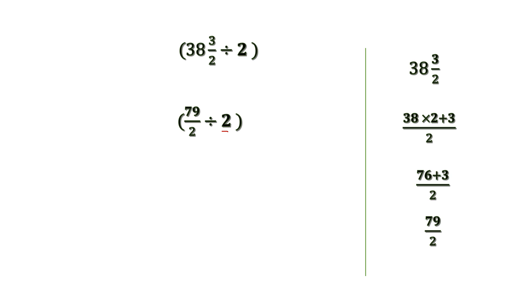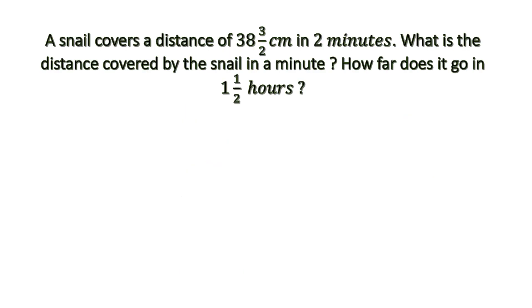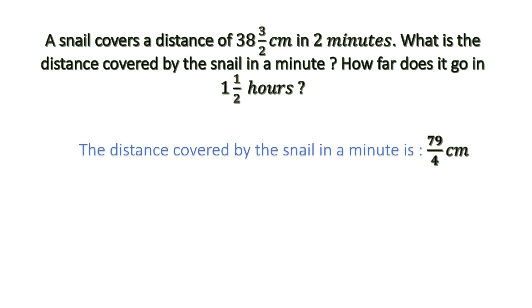2 means 2/1. Since this is division of a fraction, we change the division sign to a multiplication sign and 2/1 becomes its reciprocal, which is 1/2. There is nothing to cancel, so we multiply numerator by numerator and denominator by denominator: 79 × 1 = 79, and 2 × 2 = 4. Our final answer from this division is 79/4. So the answer to the first question — the distance covered by the snail in one minute — is 79/4 centimeters.